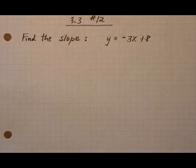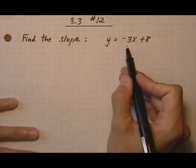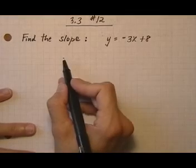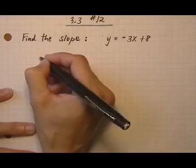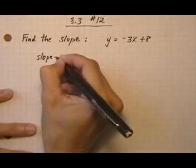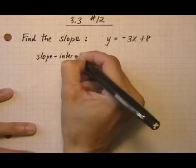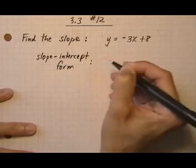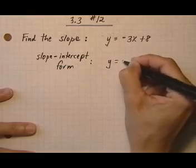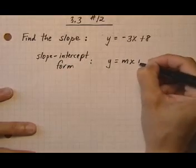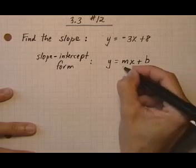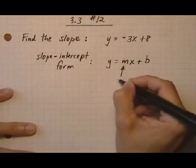3.3 number 12. Find the slope of the following equation: y equals minus 3x plus 8. What we're going to do is compare this equation to the slope-intercept form of the equation of a straight line. The slope-intercept form tells us that if you have the equation in the format y equals mx plus b, the m, or the coefficient of x, is the slope.